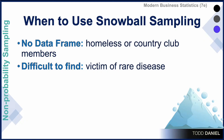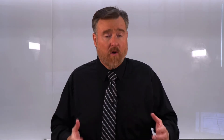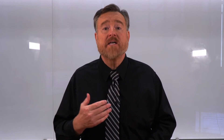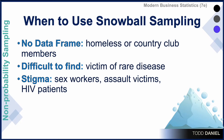You could also use snowball sampling when participants are difficult to find. For example, if you're doing research on victims of a very rare disease — people who are experiencing this condition often reach out to others for support, and as a result would have contacts with other individuals sharing that same diagnosis to whom they could refer you. Snowball sampling also works well when your research population is a stigmatized population, such as studying sex workers, assault victims, or HIV patients.